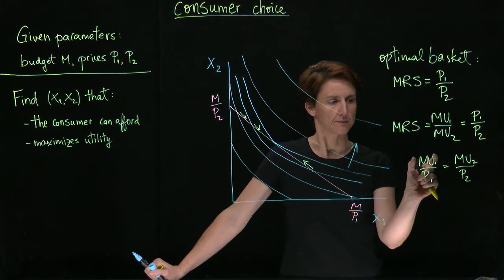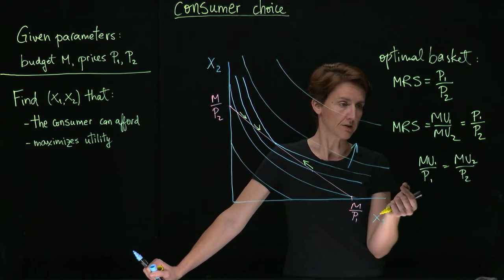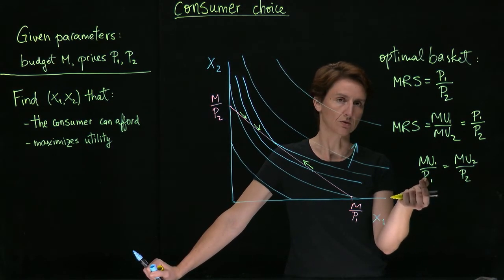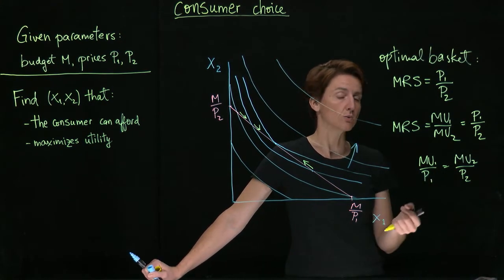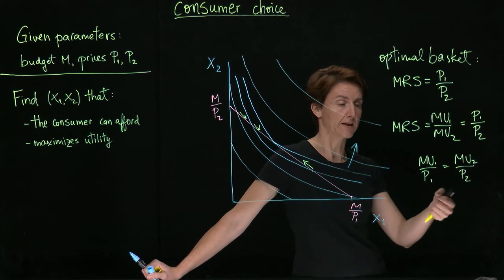What does this mean? MU1 is the extra utility from buying one more unit of good one. MU1 over P1 is the extra utility from spending one more dollar on good one.